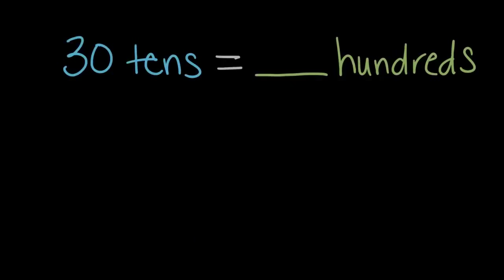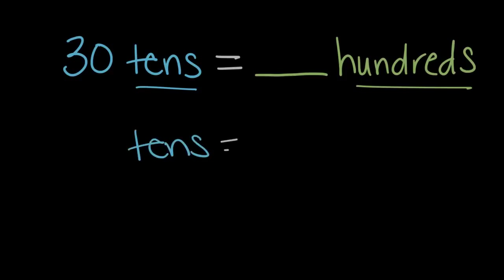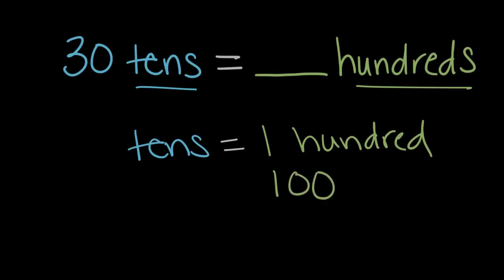Here's another one. Thirty tens equals how many hundreds? So this time we're looking at tens and hundreds. Let's think about how tens and hundreds relate — how many tens are in one hundred? If we don't know already, we can count by tens and see how many tens it takes us to get to a hundred.